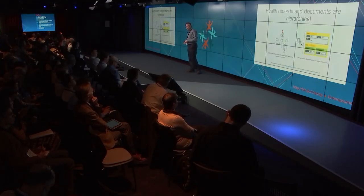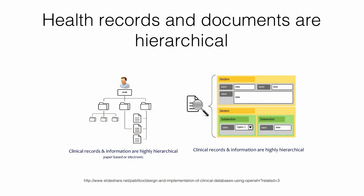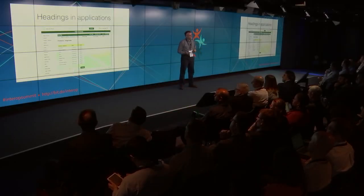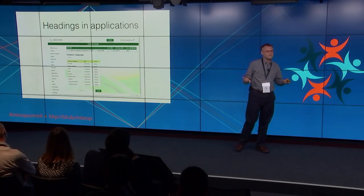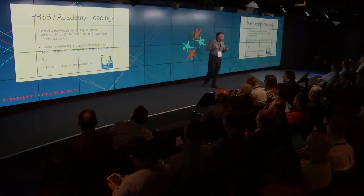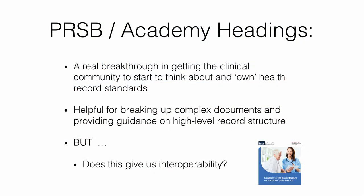Getting this kind of structuring right is vital for both achieving interoperable systems and enabling new entrants to the market to share this hard stuff. Health records are fundamentally hierarchical — sections, blocks, tick boxes all the way down — reflected in both paper documentation and electronic systems. Here is an example of an open source Ripple application demonstrator, built by Tony Shannon, showing headings on the left-hand side: problems, diagnoses, contacts, allergies. Every system of any sophistication has that kind of structure.